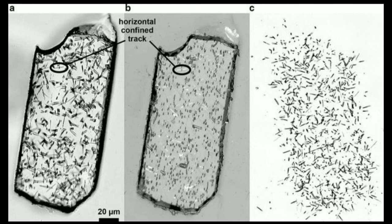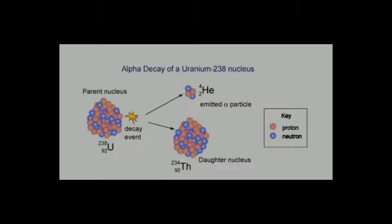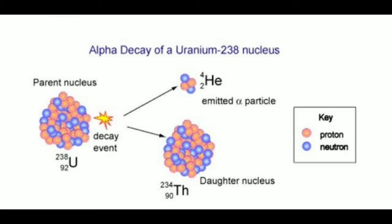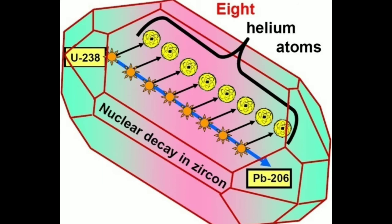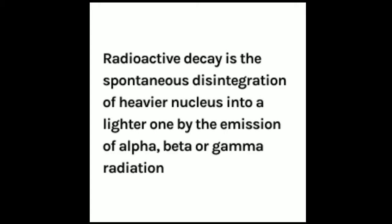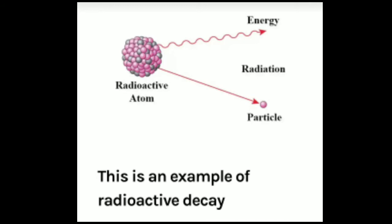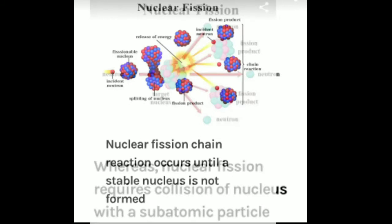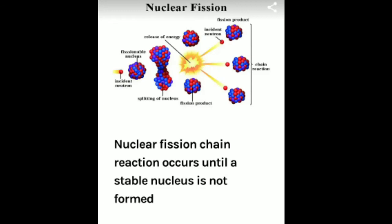Uranium in a crystal will damage the crystal structure as it decays. The main mode of radioactive decay for the uranium-238 nucleus is alpha particle emission. However, about one in every two million decays is by nuclear fission. Let's first understand the difference between nuclear decay and nuclear fission. Nuclear decay is the spontaneous disintegration of heavier nucleus into a lighter one by the emission of alpha, beta, or gamma radiation, whereas nuclear fission requires collision of nucleus with a subatomic particle. Nuclear fission chain reaction occurs until a stable nucleus is formed.